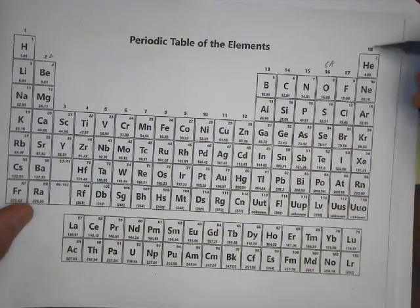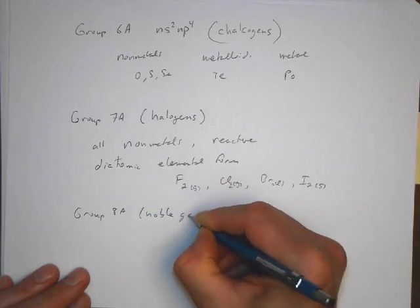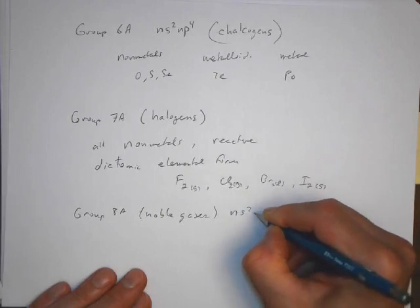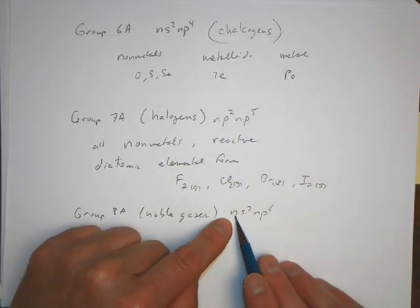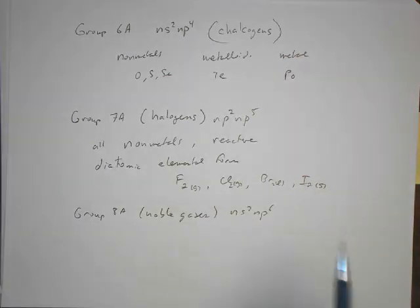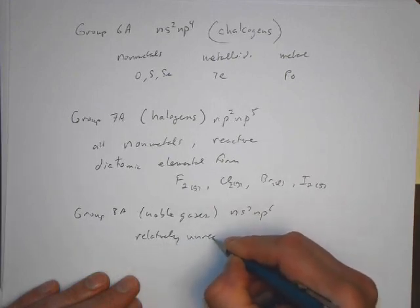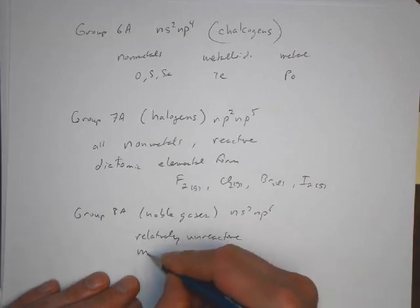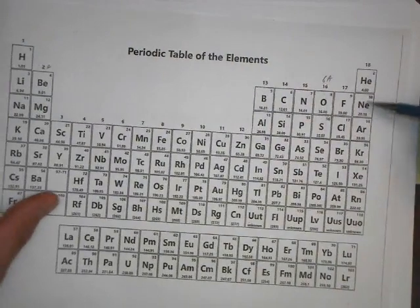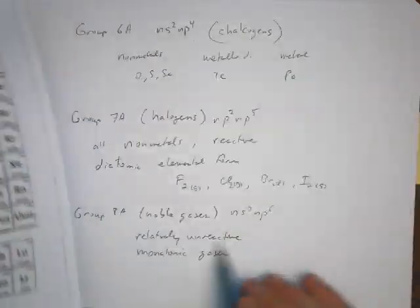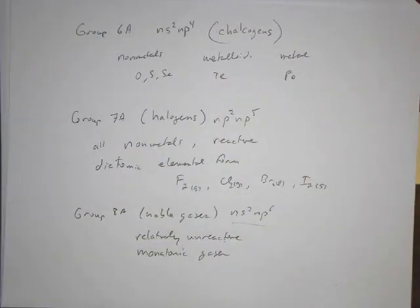And then finally, the last group as we go across would be here, the noble gases, Group 8A. We have a filled shell. We have NS2 NP6, the valence electrons are all filled. And because of that, they're relatively unreactive. And they exist as monatomic gases. In these cases, neon, argon, krypton, and so on, these all have filled valence shells. They exist as monatomic gases. Those are called the noble gases.